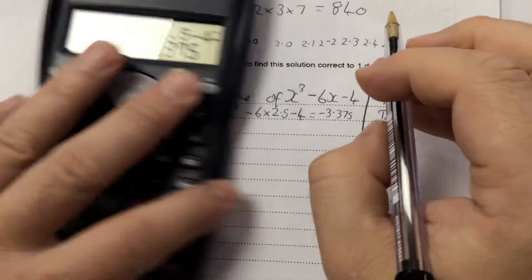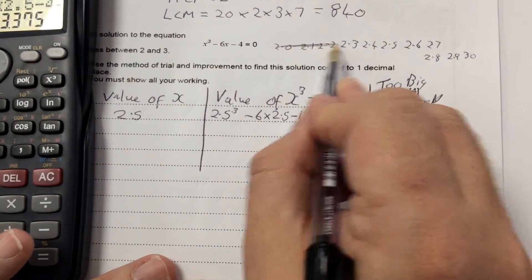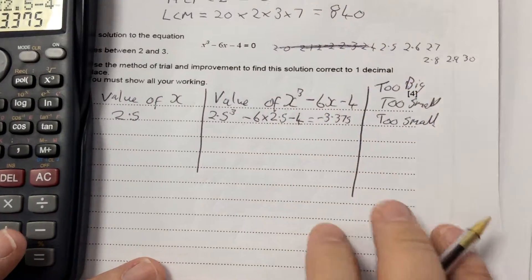So straight away I can cross off 2.0, 2.1, 2.2, 2.3, 2.4.